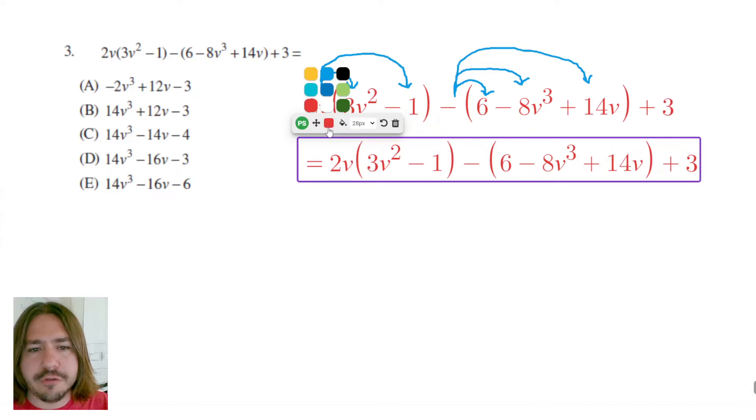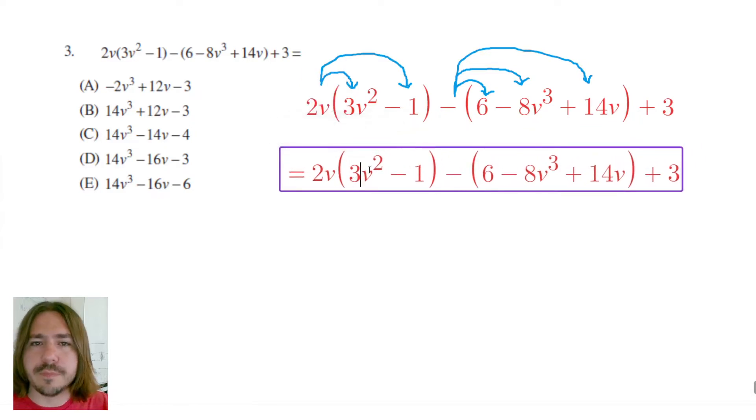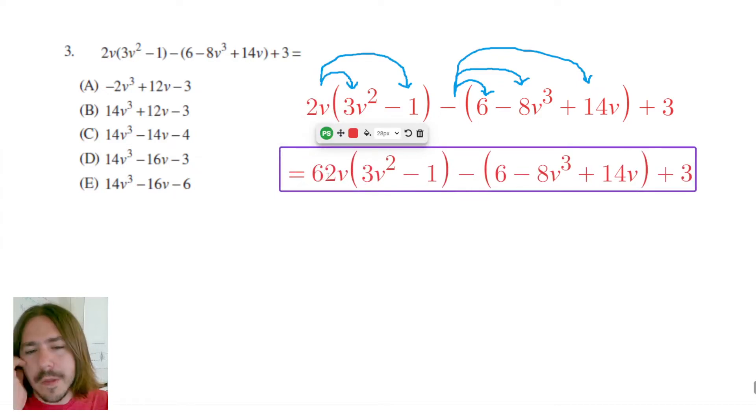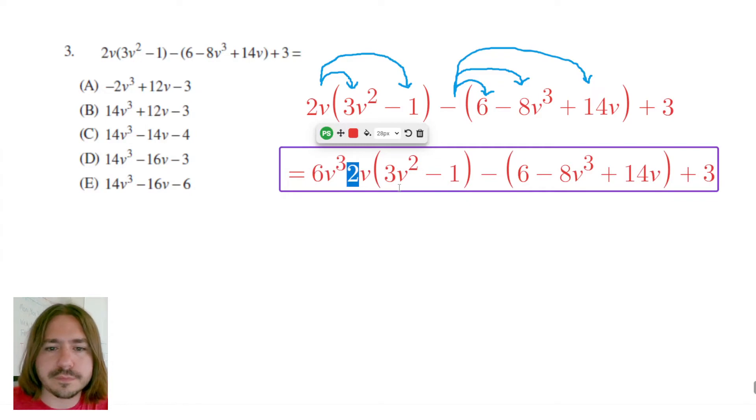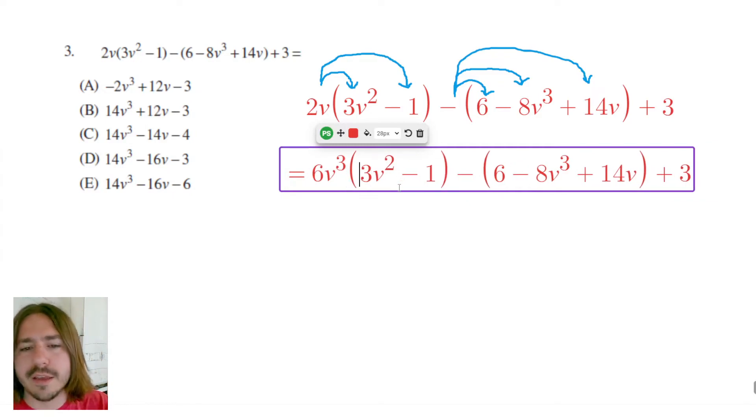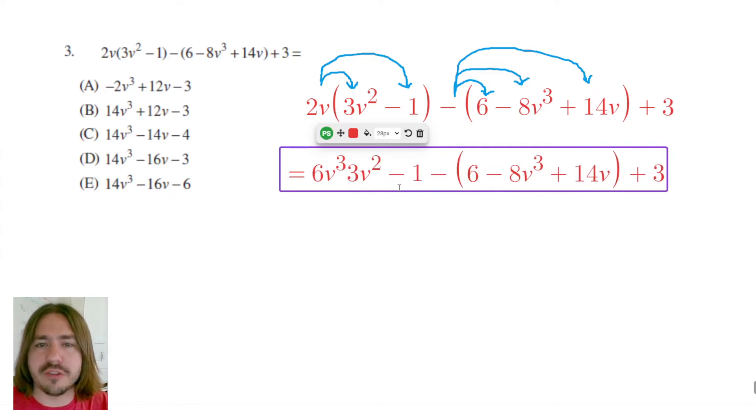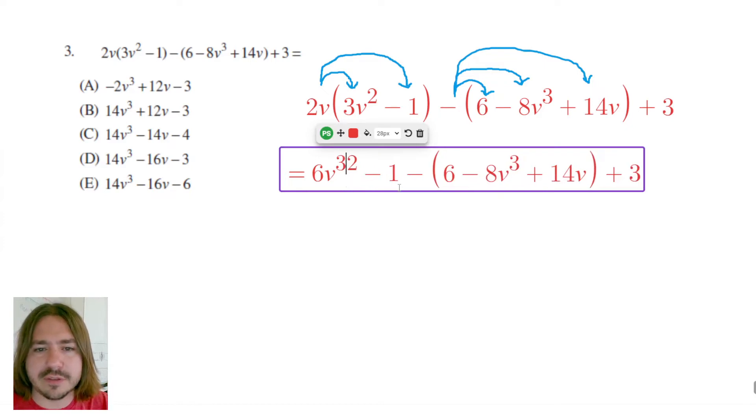So when I multiply 2v by 3v squared, the way to do that is first you multiply the coefficients. So 2 times 3 would be 6. And then you multiply the variables. A single v times v squared is going to end up being v cubed. Whenever you multiply variables which are the same, you add the exponents. Finally, 2v times negative 1 is going to be negative 2v.